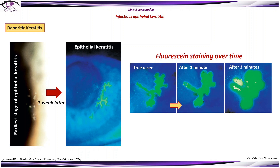Here we can see fluorescein staining over time. At the beginning there is a well-demarcated dendritic ulcer, which after one minute can give the impression of a bigger ulcer, and after three minutes we can see real stain spreading. The stain moves into the surrounding epithelium, giving a false impression of the size of the ulcer.